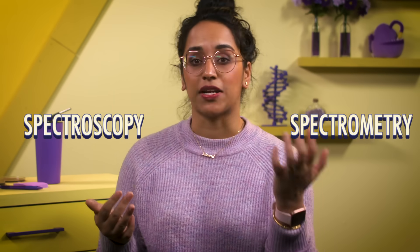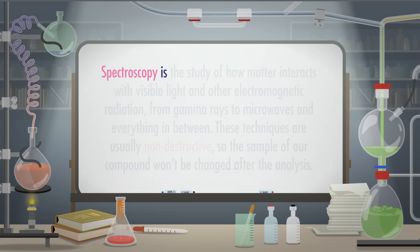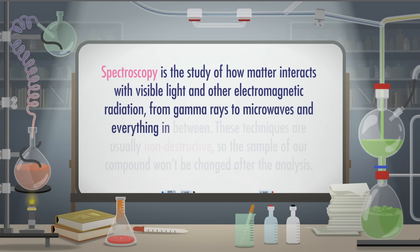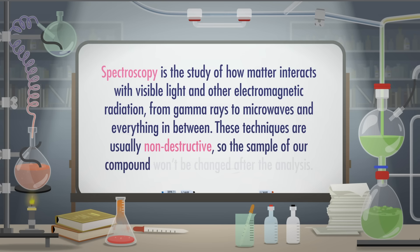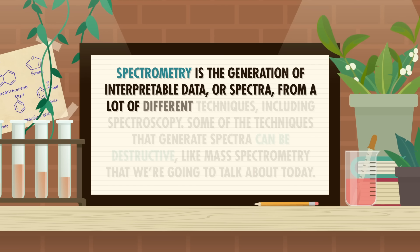Before we get too deep into our mystery, we need to set something straight. Spectroscopy and spectrometry are not interchangeable words. Spectroscopy is the study of how matter interacts with visible light and other electromagnetic radiation, from gamma rays to microwaves and everything in between. These techniques are usually non-destructive, so the sample of our compound won't be changed after the analysis. Spectrometry is the generation of interpretable data, or spectra, from a lot of different techniques, including spectroscopy.